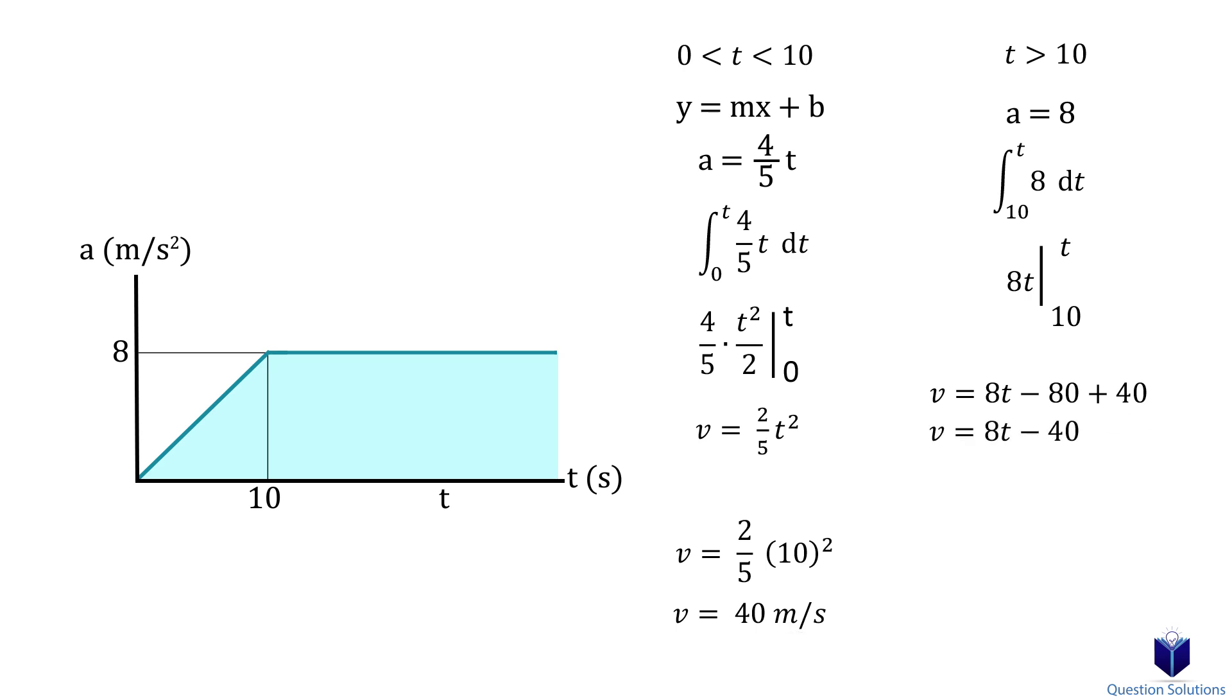Now that we simplified our equation, we can figure out at which point in time the velocity is 50 meters per second. Substituting gives us the following. Solving for t gives us 11.25 seconds.